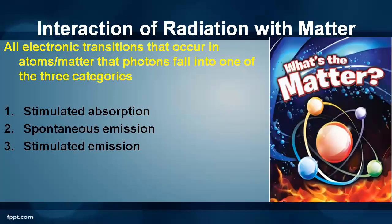Coming to a brief introduction related to how the light is amplified and how the radiation interacts with the matter — what is the matter? Matter consists of atoms. Again, atoms consist of electrons, protons and neutrons. The protons and neutrons are located in the nucleus and electrons are revolving in different orbits around the nucleus.